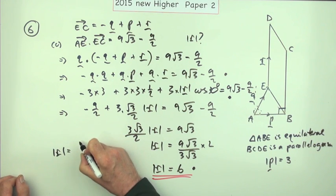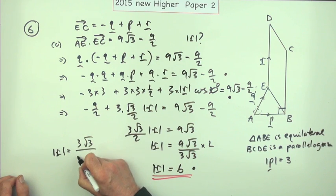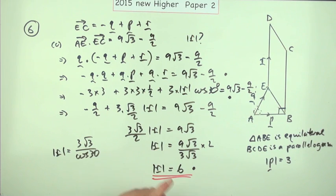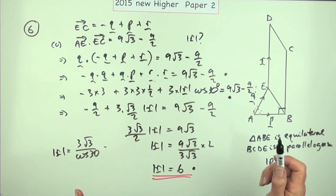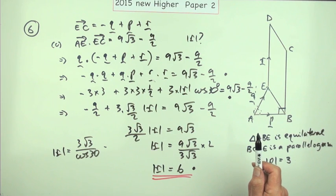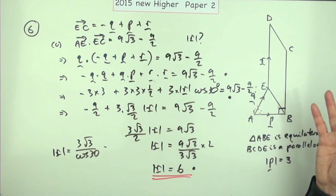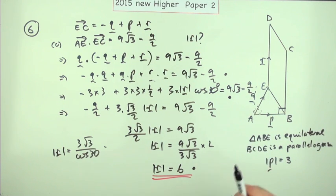They're letting you have the final mark if you end up with 3 root 3 over cosine 30. I would say you would never consider doing that because you know the value of cosine 30, just like in the first one when you evaluated p dot q you would never leave it as 9 cosine 60. But as far as you're concerned, the procedure for the Higher is all numerical answers must be fully simplified unless the marking scheme states otherwise, but that's after the event, you're not to know that.